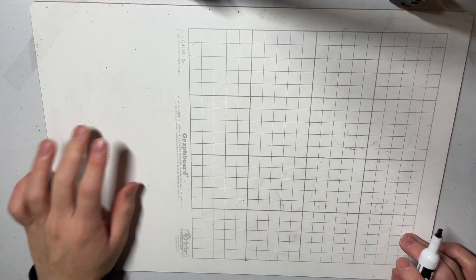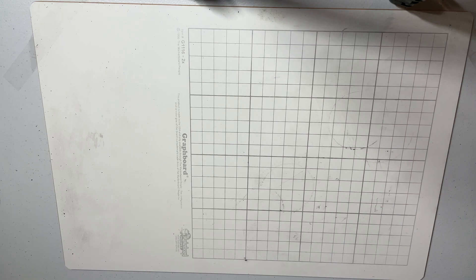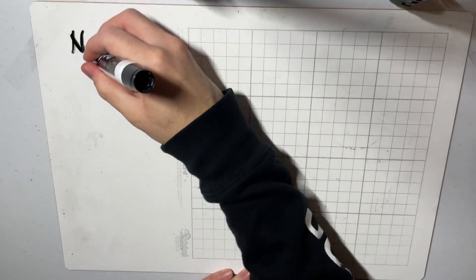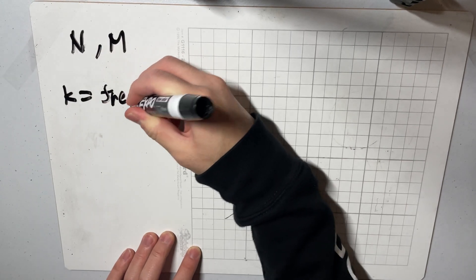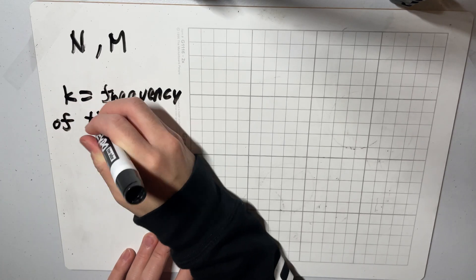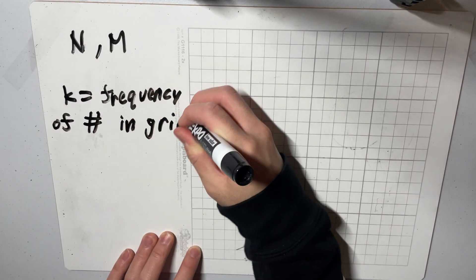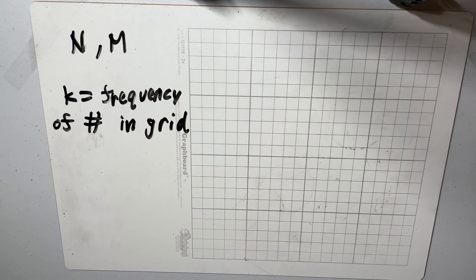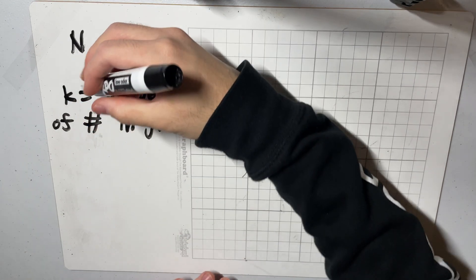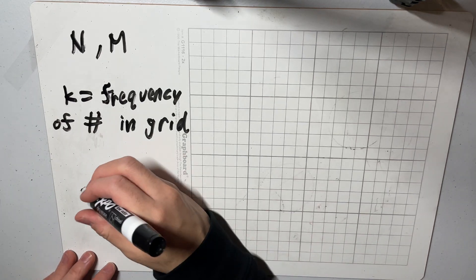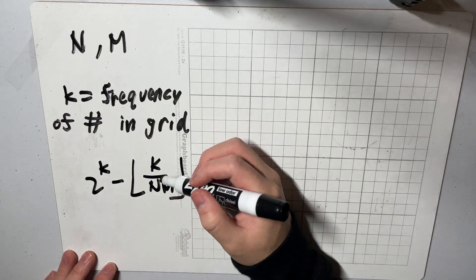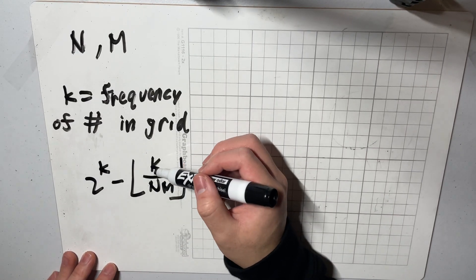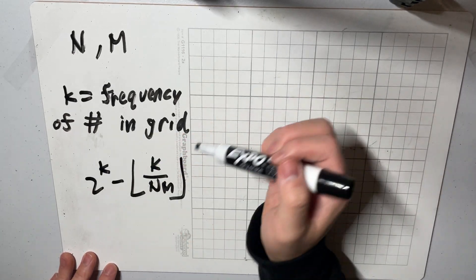I think it's actually easier to give you the formula first and then explain how we got it. So if we let, for each test case, n equal to the number of rows, m equal to the number of columns, and we define a third variable k — k is equal to the frequency of pound signs in our input or test case. This represents how many spots can be a number that doesn't necessarily have to be zero. The final formula will look something like 2 to the power of k minus floor(k / (n times m)). This floor division is zero if k is strictly less than n times m, and it's equal to 1 if k equals n times m — in other words, if the entire grid is full of pound signs.